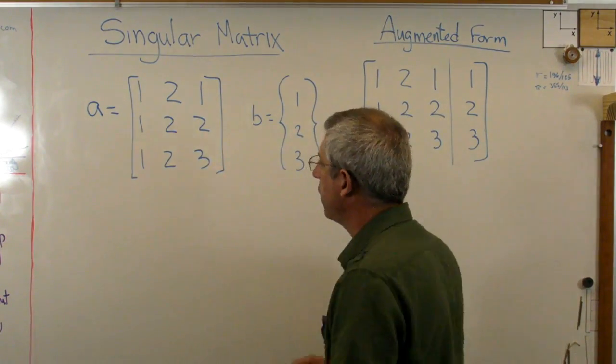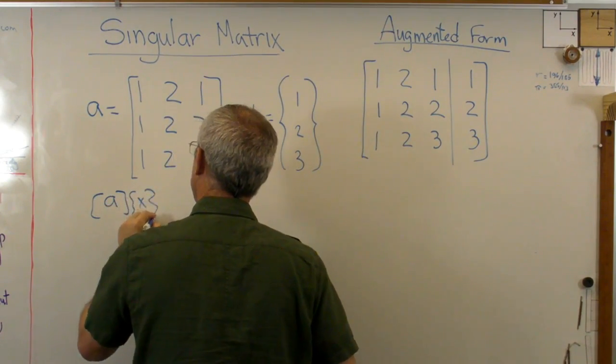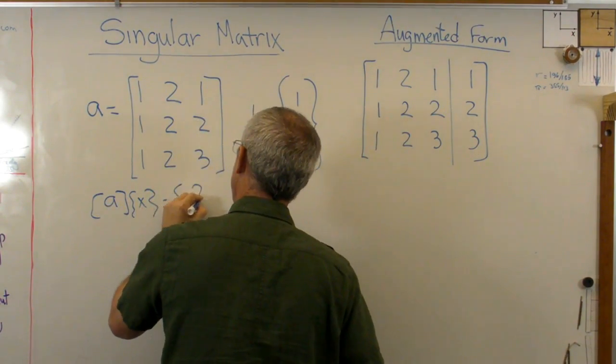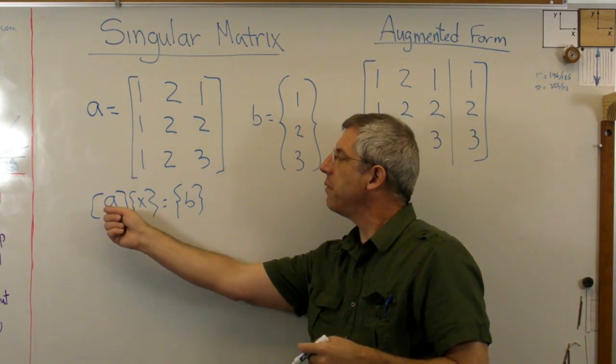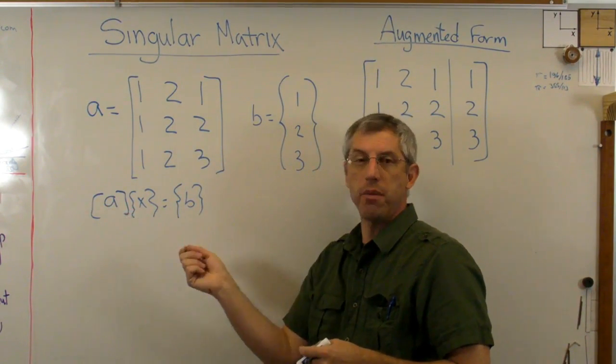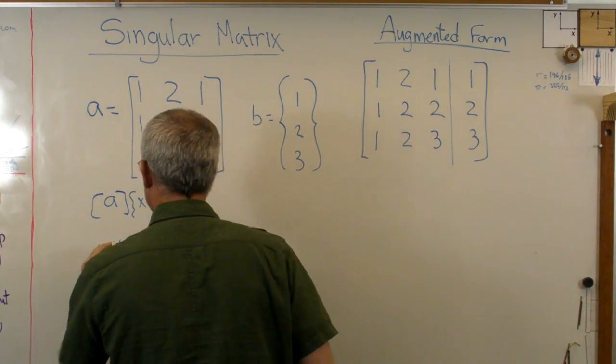What I would do here, if I have Ax equals b, right? If those were just numbers, the way I would solve this, instead of matrices, if those were just numbers, I'd divide by a and I'd say x equals b over a. Well, that's pretty much what you do in matrix form.